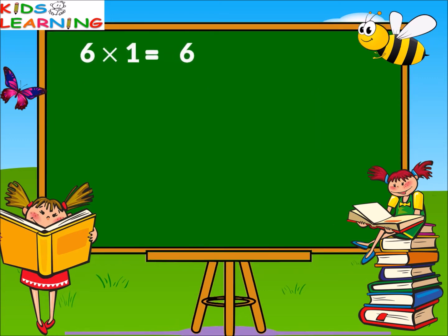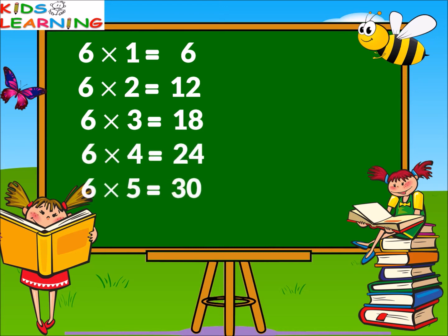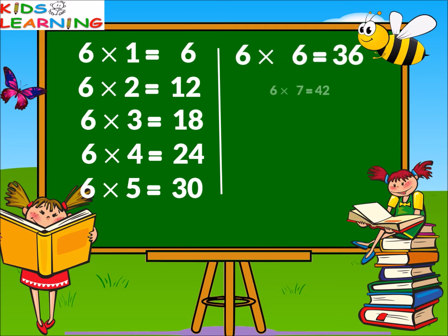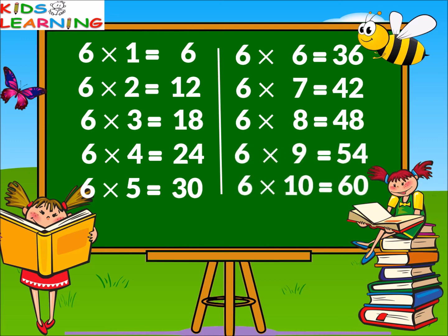Six ones are six. Six twos are twelve. Six threes are eighteen. Six fours are twenty-four. Six fives are thirty. Six sixes are thirty-six. Six sevens are forty-two. Six eights are forty-eight. Six nines are fifty-four. Six tens are sixty.